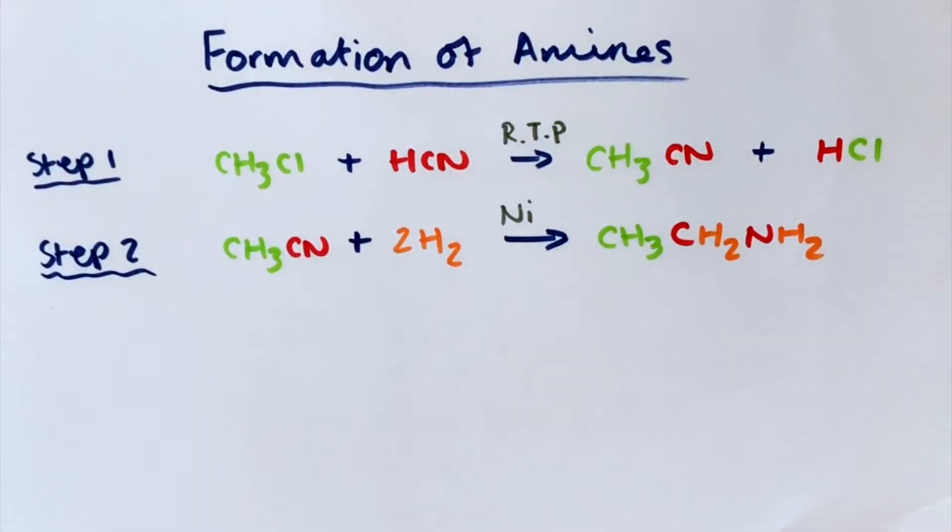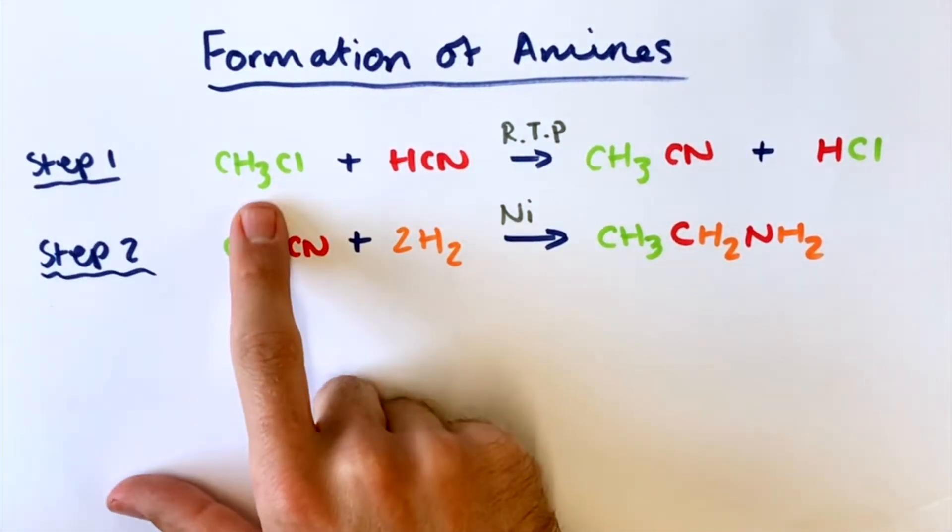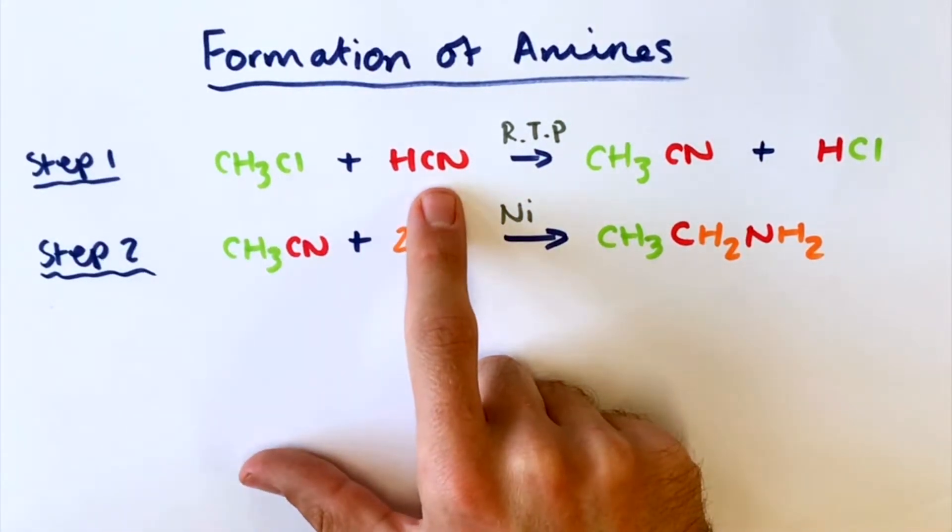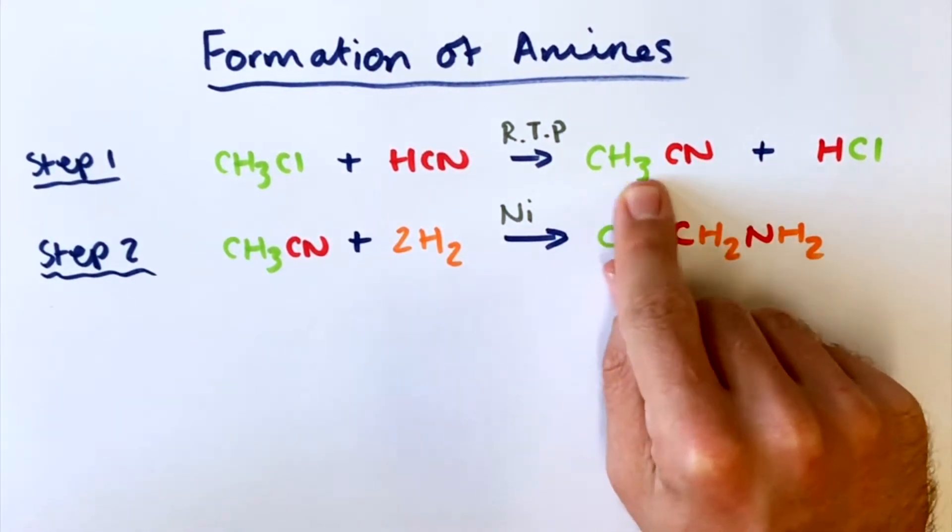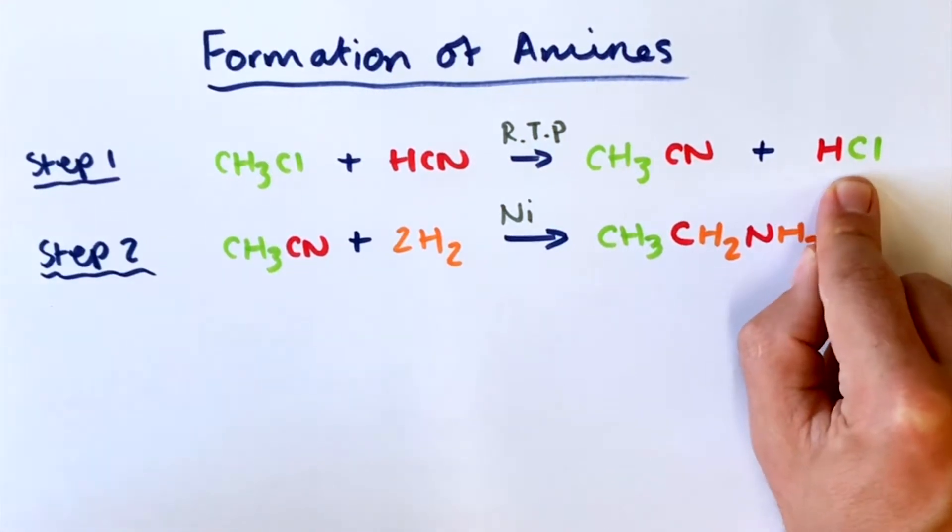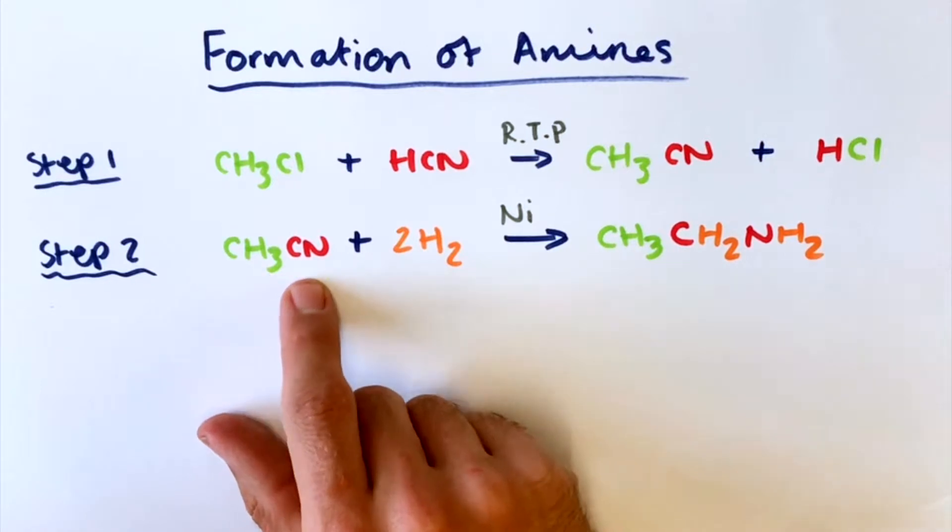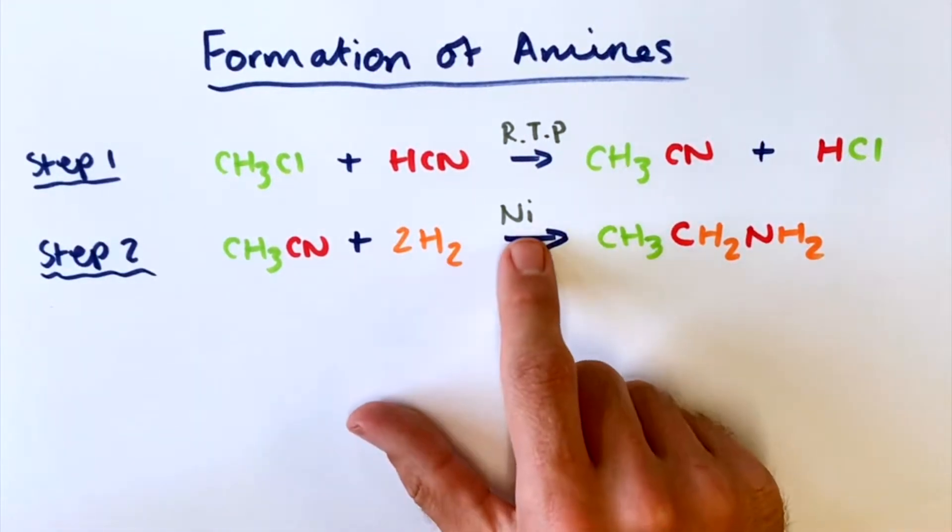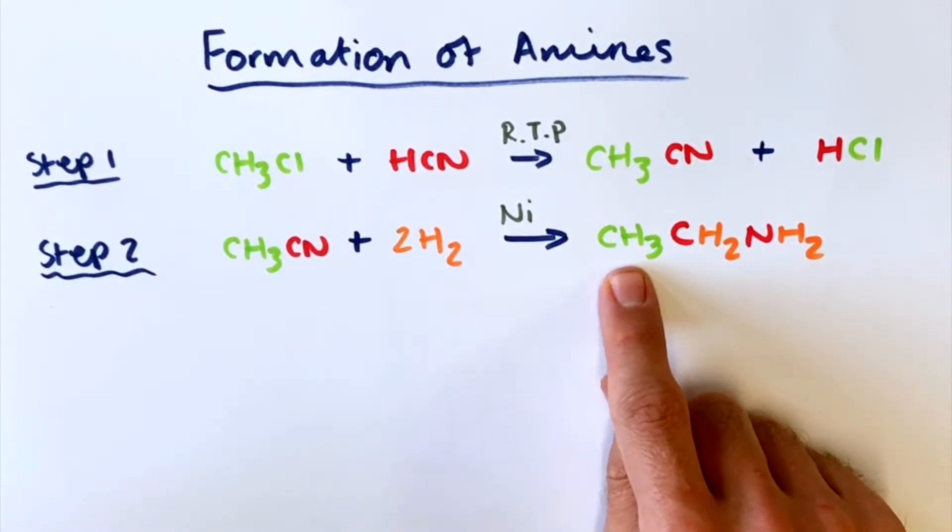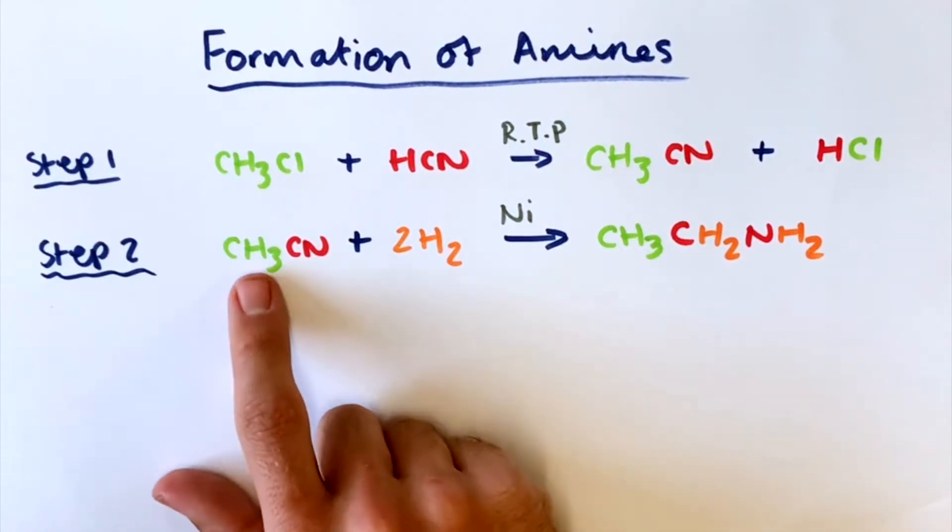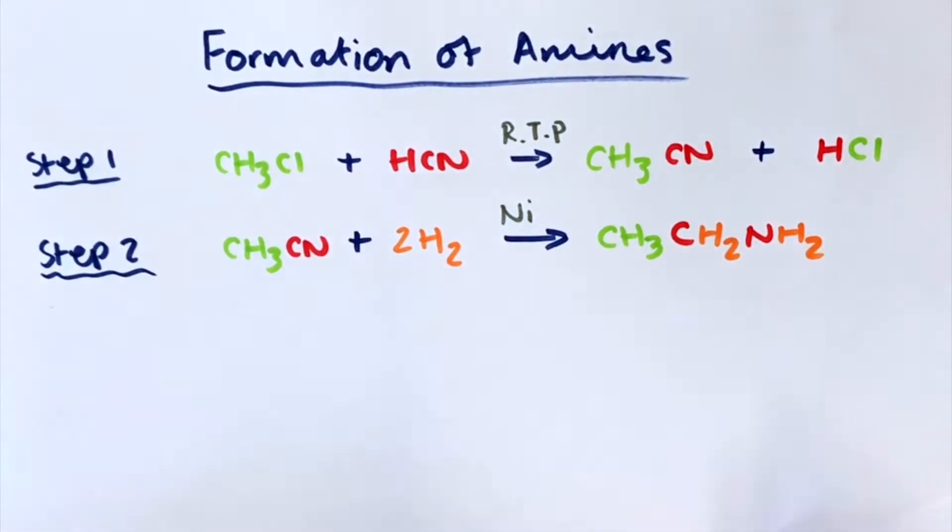So our second way of producing an amine is by a two-step synthesis. So step one here we start with our halo alkane. We're going to react with hydrogen cyanide under room temperature and pressure. This is going to produce a nitrile and we'll have a waste product here of some hydrogen chloride. Then followed by step two we have our ethane nitrile reacting with hydrogen in the presence of a nickel catalyst. And this is going to produce ethylamine. So we've got ethylamine here as our product. Now this is a reduction reaction because we're adding hydrogen to our ethane nitrile to produce our ethylamine.